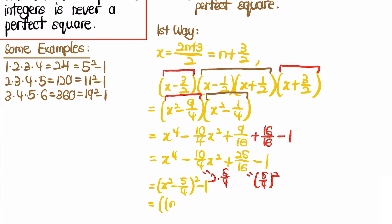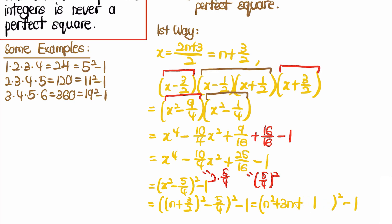Replacing x with n + 3/2, we get (n + 3/2)² - 5/4, all squared, minus 1. Expanding gives n² + 3n + 9/4 - 5/4 = n² + 3n + 1, so the whole product equals (n² + 3n + 1)² - 1.